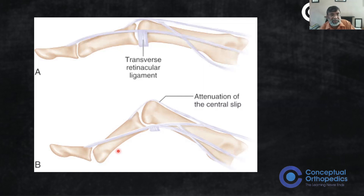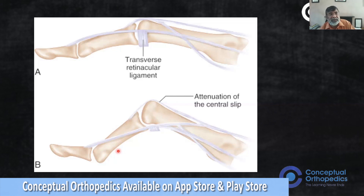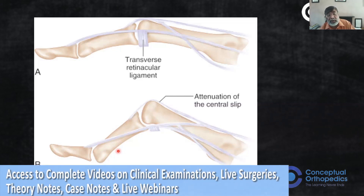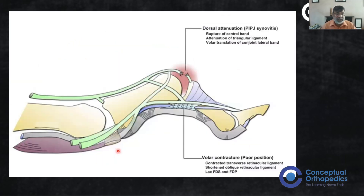Rather than memorizing the classification, simply assess whether the joint is flexible or stiff. Test mobility in both MCP flexion and extension positions, as this helps differentiate intrinsic contracture. Watch the patient's face to gauge pain during examination. If the joint is very stiff and painful, the treatment will be completely different. In examination, confirm the boutonniere deformity, confirm the synovitis, confirm the flexibility of the joint - that is all you need.